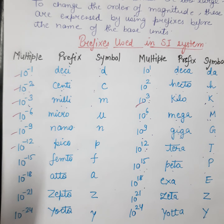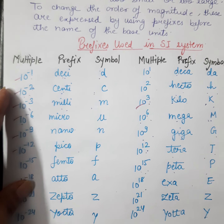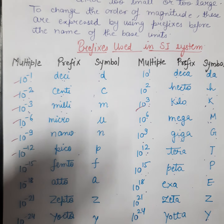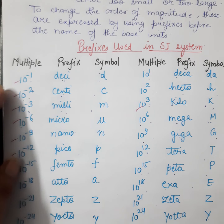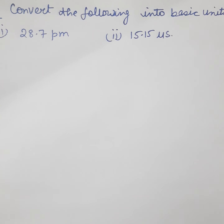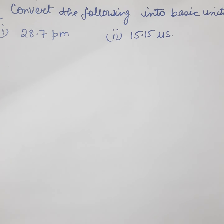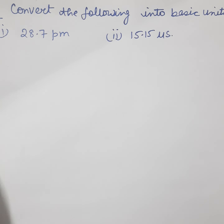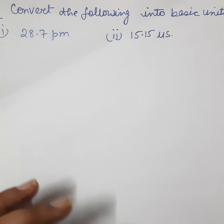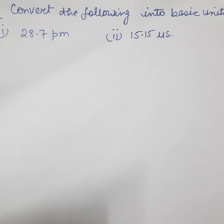These are the prefixes used before the name of the base unit. This whole table is already in your NCERT book — just go through your NCERT to better understand the prefixes and how conversions are done. Let's take an example: convert the following into basic units. The first is 28.7 picometers. We already learned that 1 pico equals 10⁻¹².